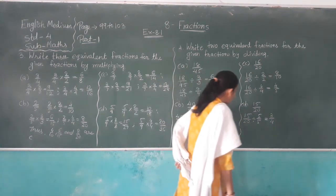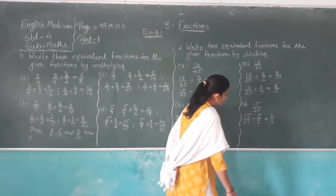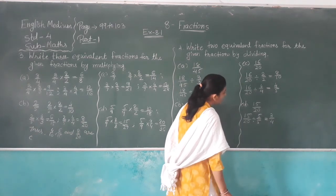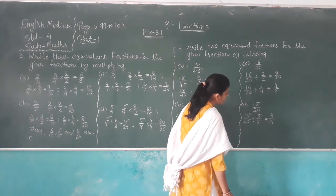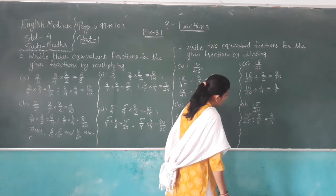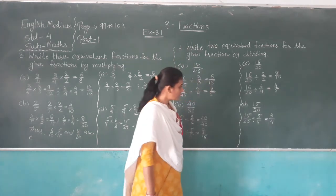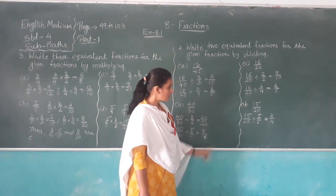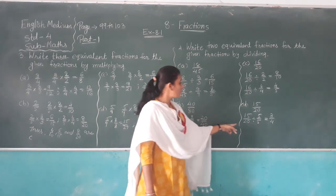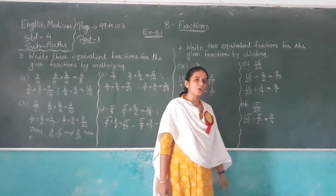Fifteen over twenty divided by five over five: five threes are fifteen and five fours are twenty. Both are in the five times table, so three out of five. Then dividing by three also gives one equivalent fraction, three out of four.